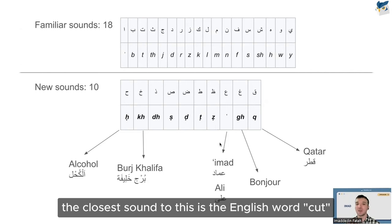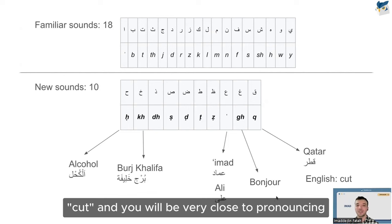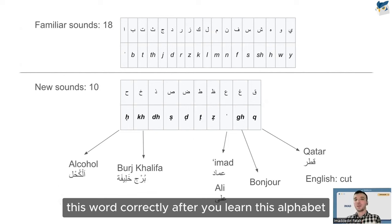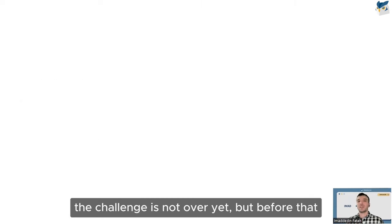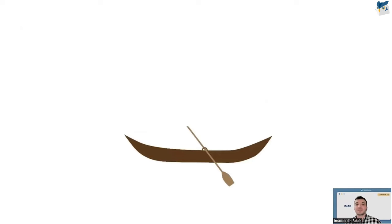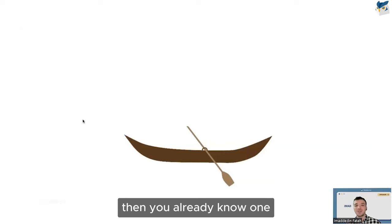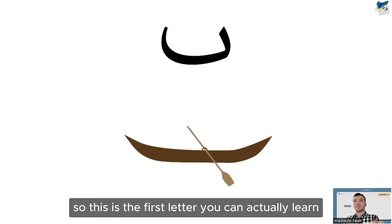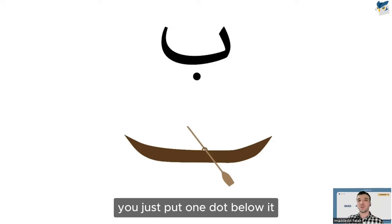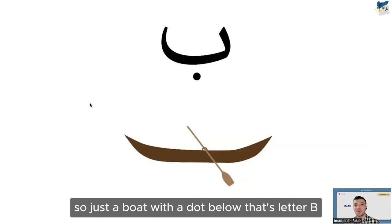The challenge doesn't end after learning the sounds. But here's a fun trick: what does this shape look like? A boat, right? If you can see a boat, you already know one Arabic letter. Just remember the boat and add one dot below it — that's the letter 'b.' A boat with a dot below equals the letter 'b.' Congratulations, you've learned your first Arabic letter.